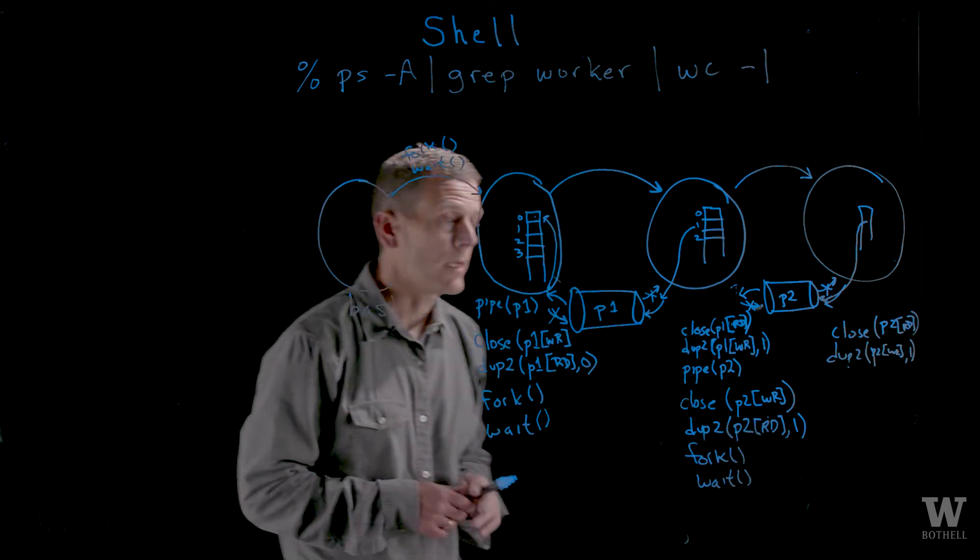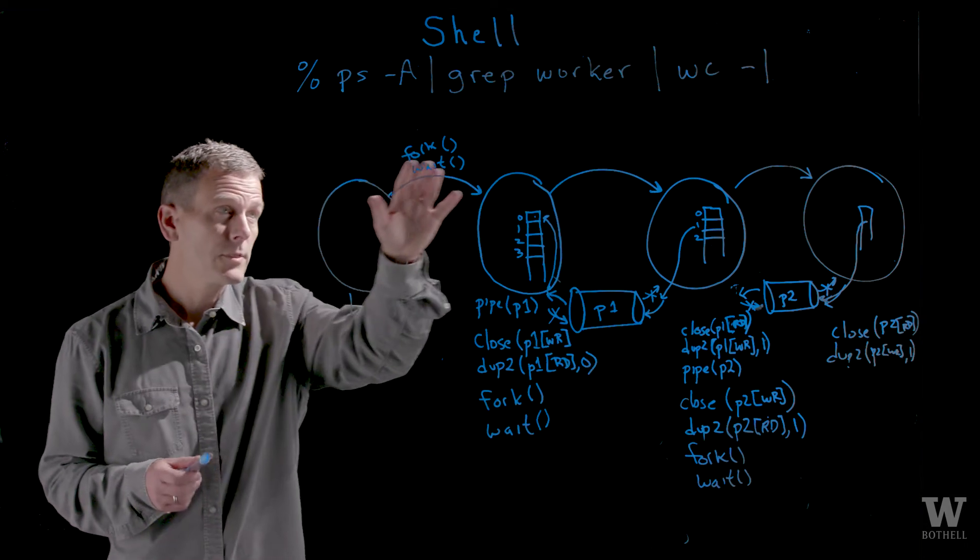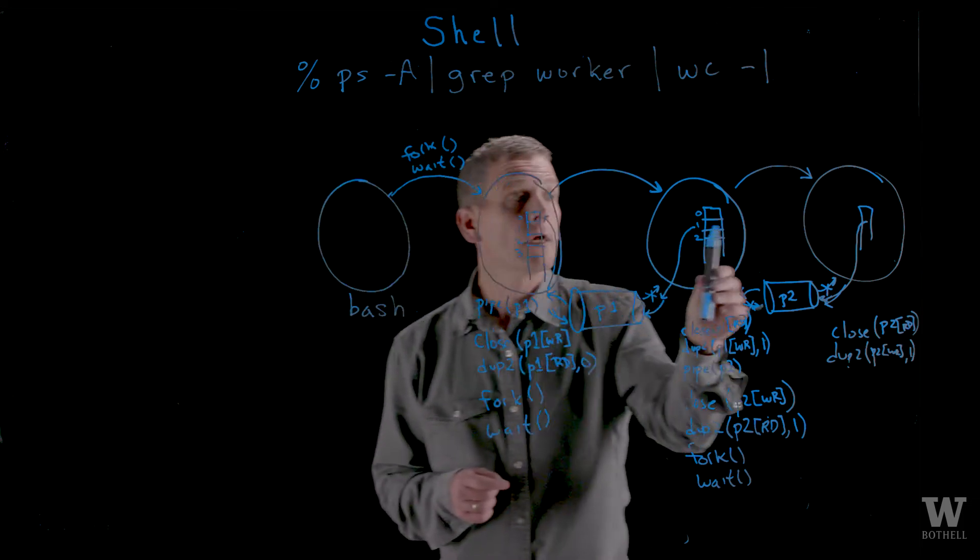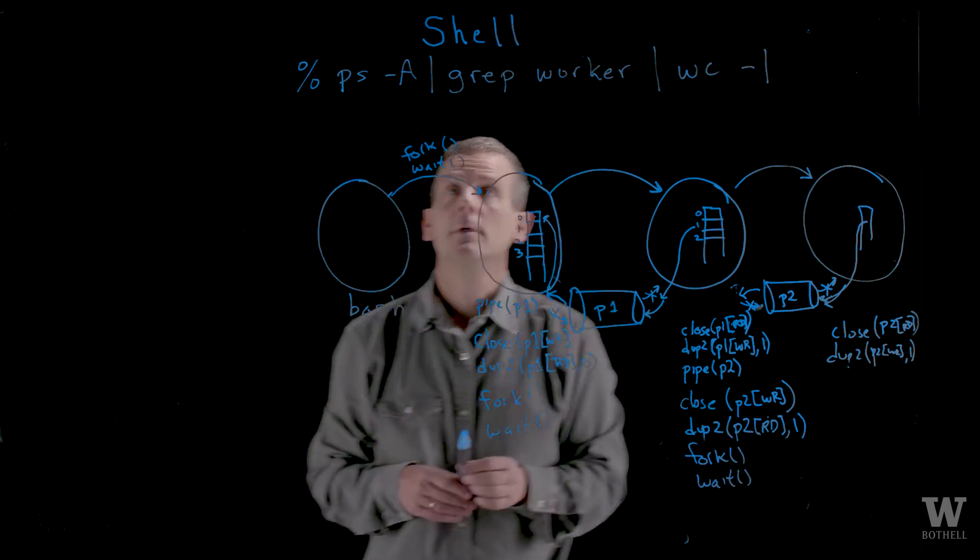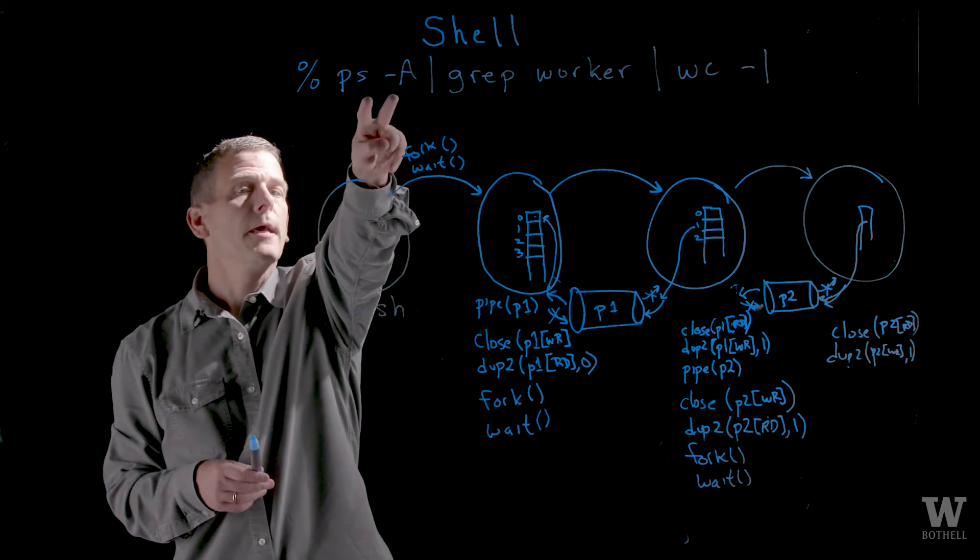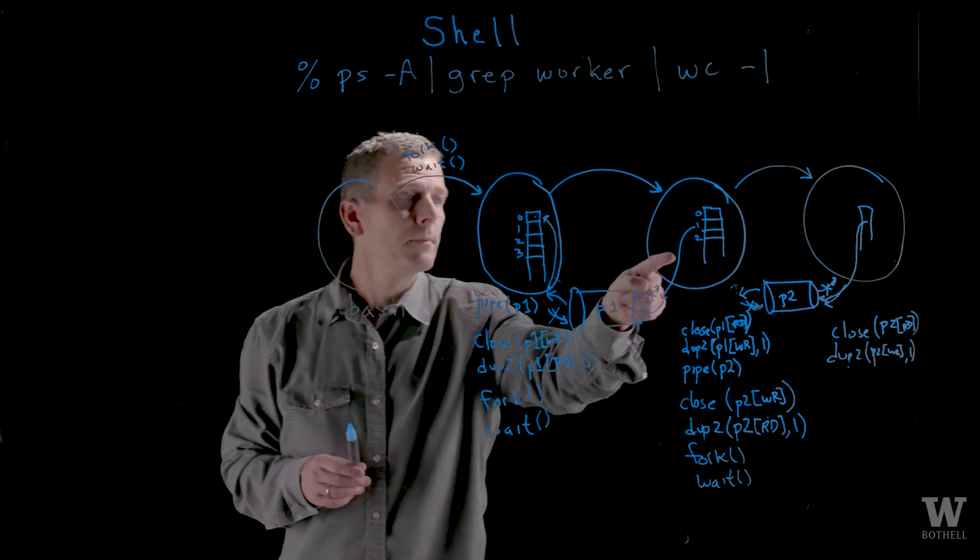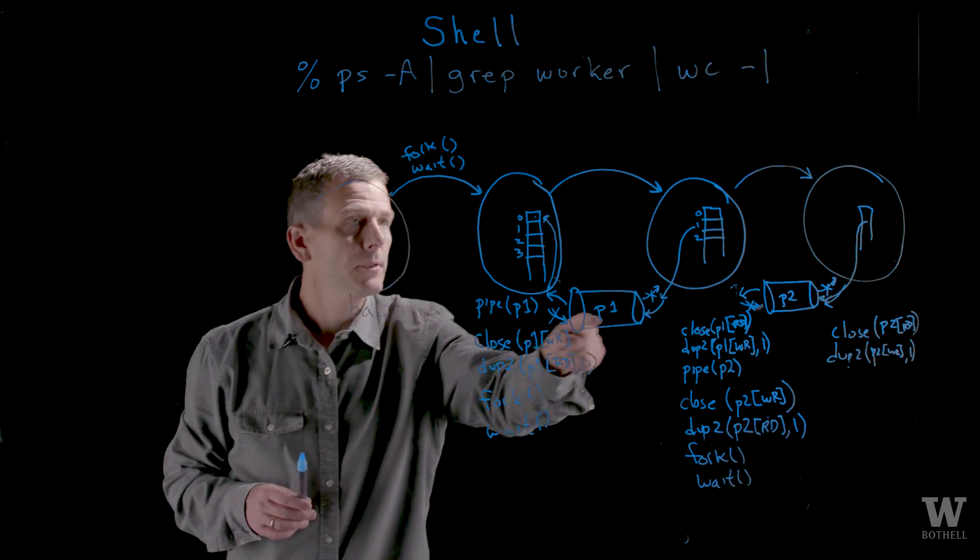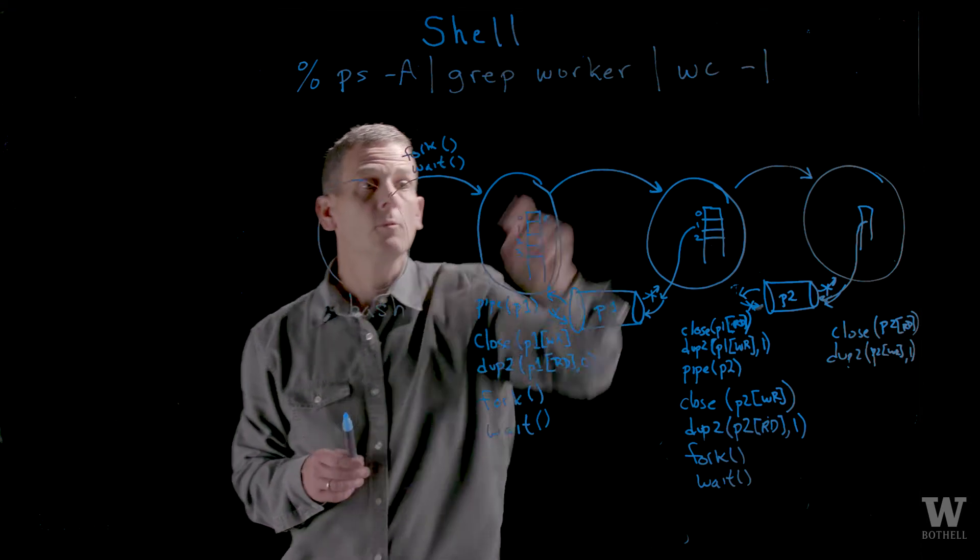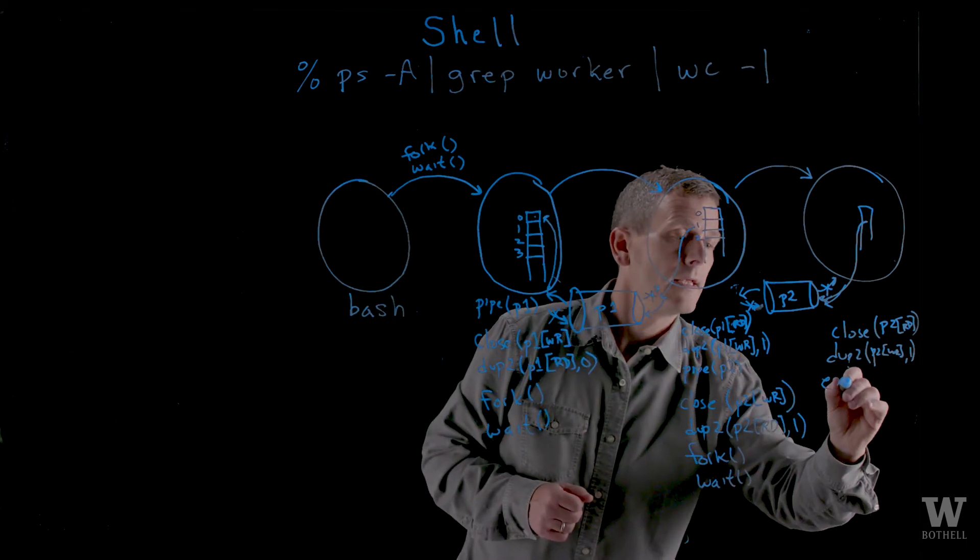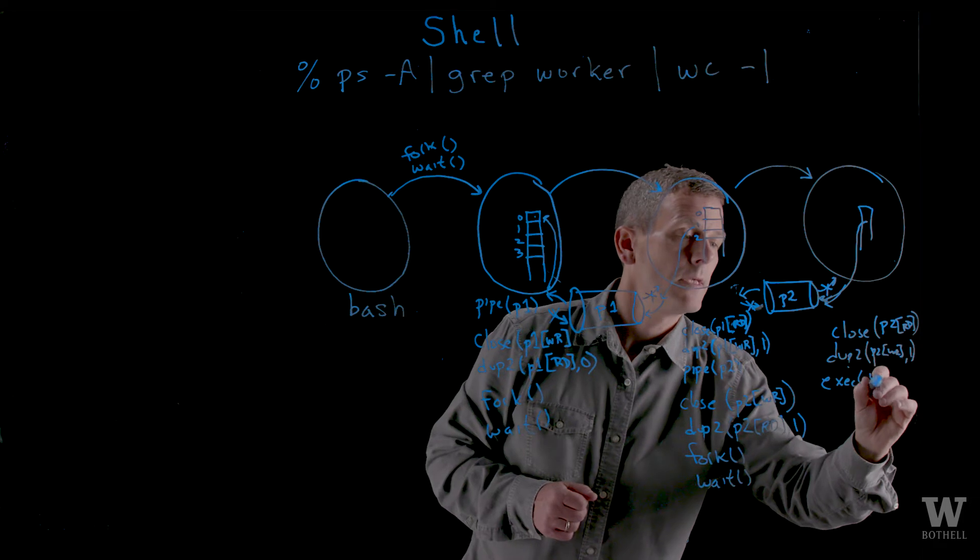So the standard out will go into the pipe and can be read into standard in of the previous pipe. Now I'm ready to execute my process. Of these three, which should be executed in the child, grandchild, great-grandchild of the bash shell? Well, we want the ps output to go into the input of the grep and the output of the grep to go into the input of the word count. So here I exec ps.